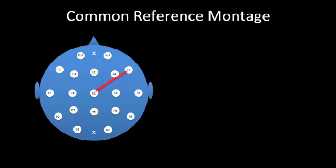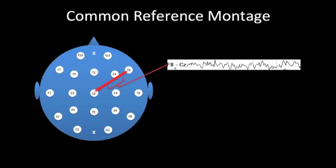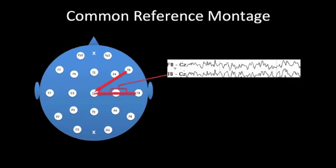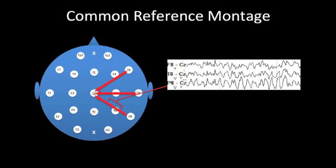The second type of montage we will discuss is the common reference montage. In this situation, we compare the signal at every electrode position on the head to a single common reference. One of the most common is the Cz montage, where we compare every electrode on the head to Cz. For example, the first channel is F8 to Cz, then moving posteriorly, T8 to Cz, and then P8 to Cz, generating a chain in the same way as the anterior-posterior bipolar montage.